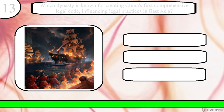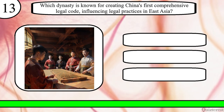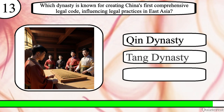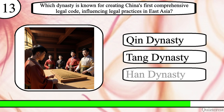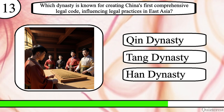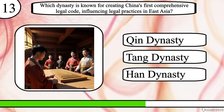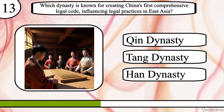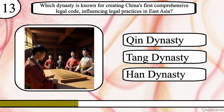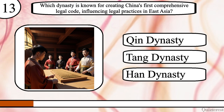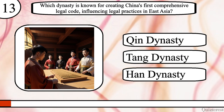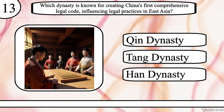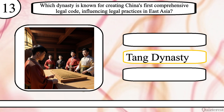Question 13. Which dynasty is known for creating China's first comprehensive legal code, influencing legal practices in East Asia? Qin dynasty, Tang dynasty, or Han dynasty? The correct answer is Tang dynasty.